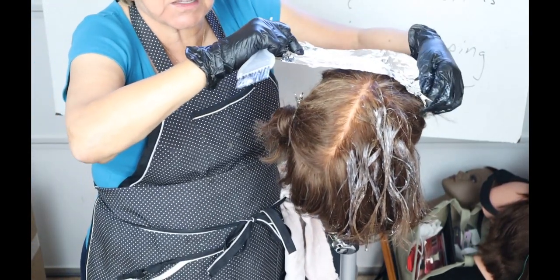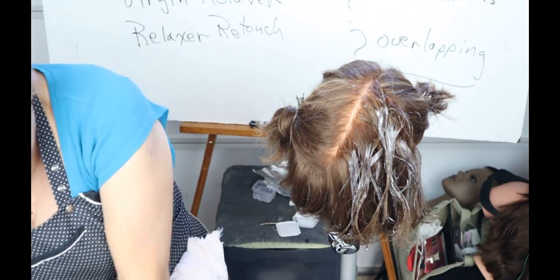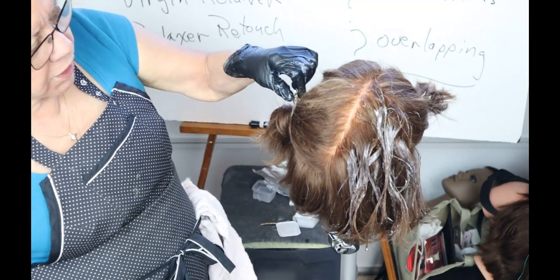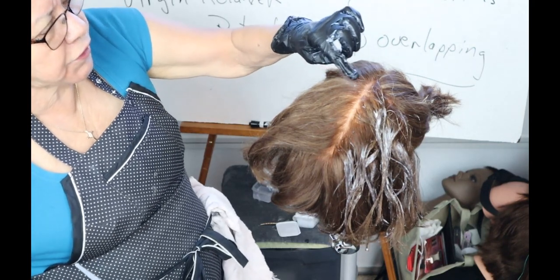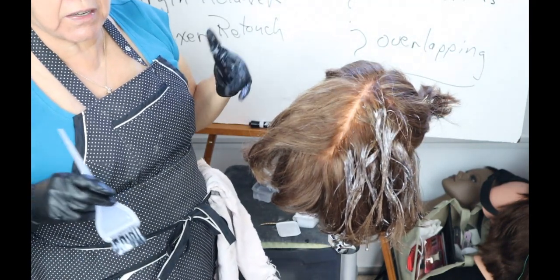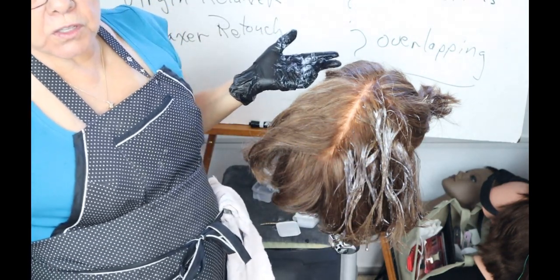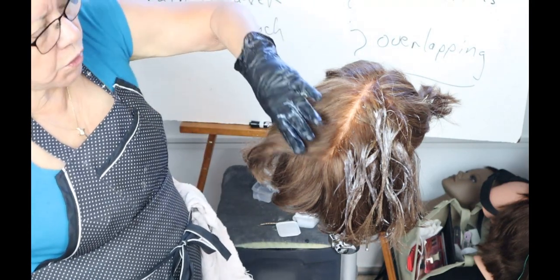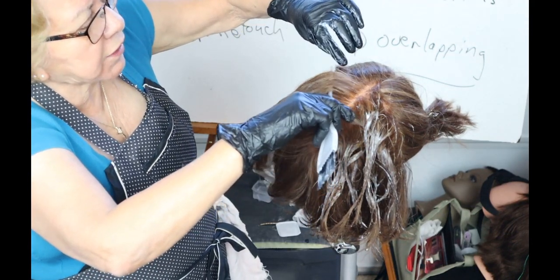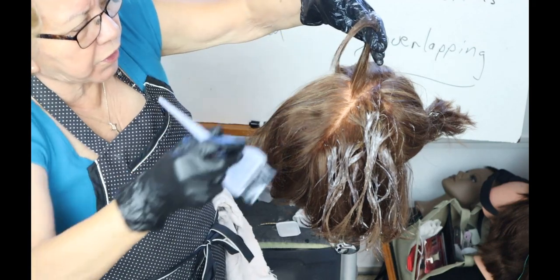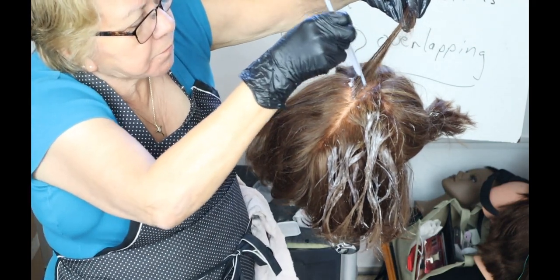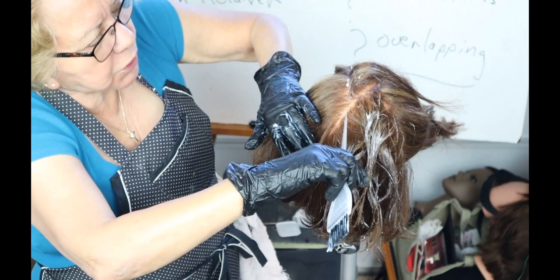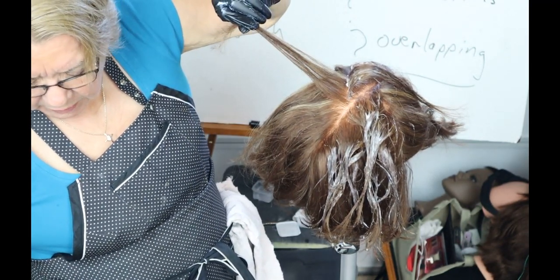This is a mannequin so she won't complain. Later I'll show you how to take it back to the scalp and bring it all the way out. Now we're going to do a retouch. The retouch is only on the hair that has grown out. If you've gone darker, you bring it all the way out to the ends. This grown-out area — right there — is where the retouch goes.